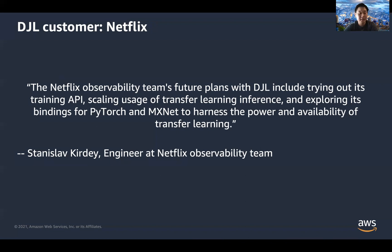Another major customer leveraging Deep Java Library really well is Netflix. They're building online streaming services based on deep learning, and have built automated services that can automatically identify anomalies from their system logs. This requires very high throughput and low latency because they want to collect this information in real time to automatically fix problems as they occur.